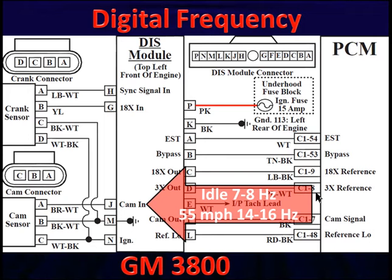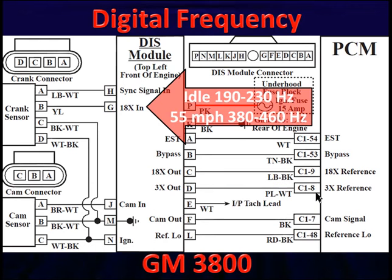We can take a digital multimeter and use the frequency function. Taking a GM 3800 here, we're going to put our voltmeter on pin J coming out of the cam sensor. With the voltmeter set on frequency, we'll read 7 to 8 hertz at idle. At 55 miles an hour, it'll be up to around 14 to 16 hertz. What this tells us is we have a signal. Does it tell us if it's synchronized to the engine at the right location? No. We know nothing about its relation to others — all we know is the signal has a frequency. If we move up to the 18x, we can say 18x at idle has 190 to 230 hertz, and at 55 mph it's got 380 to 460 hertz. Again, this just tells us we have a frequency and it's doing something.